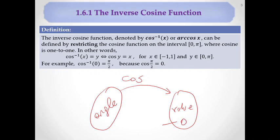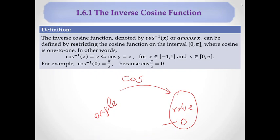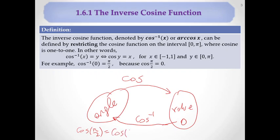We want to get the angle that corresponds to a given value. When zero is given, we want to find which angle corresponds to it, like 90 degrees or pi over two. This function will be the cosine inverse function. One important thing here is: if you try to go from zero back to an angle using the inverse function, we have some problems.